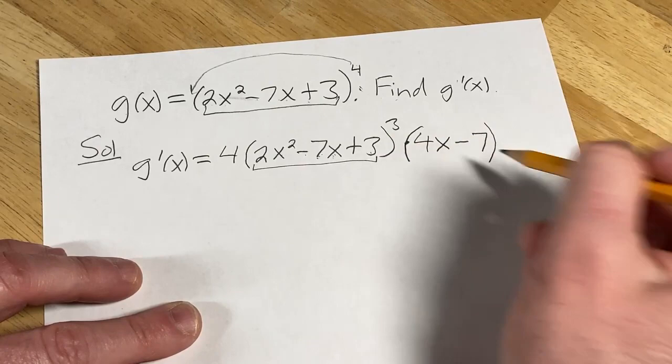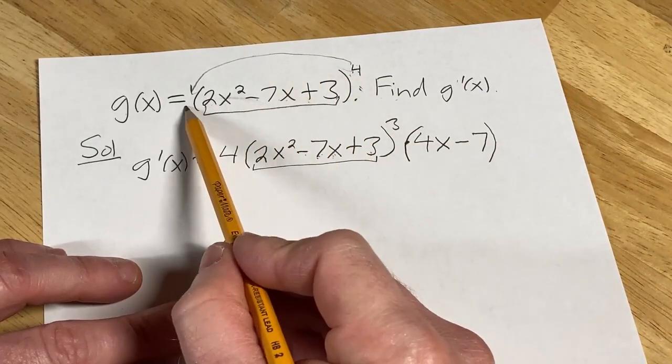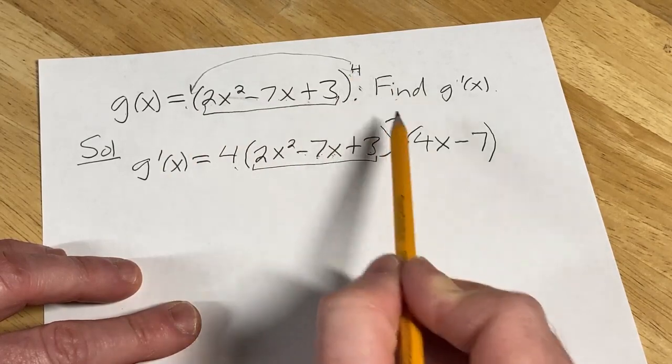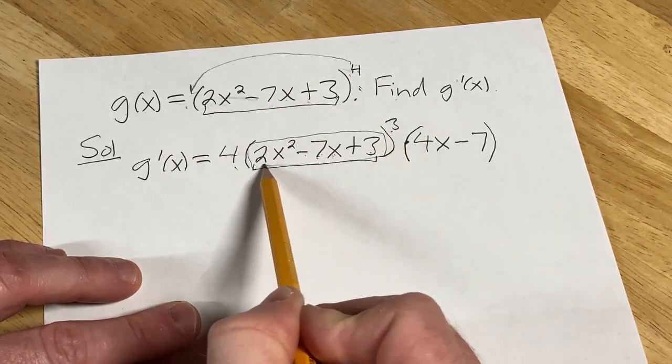Let's just check that we took the derivative of the outside correctly. We brought the 4 down, put it in the front, subtract one from the exponent, leave the inside function alone—you're taking the derivative of the outside evaluated at the inside.